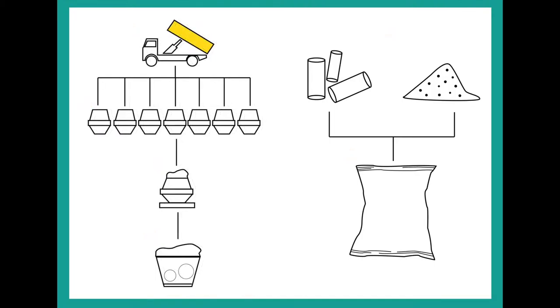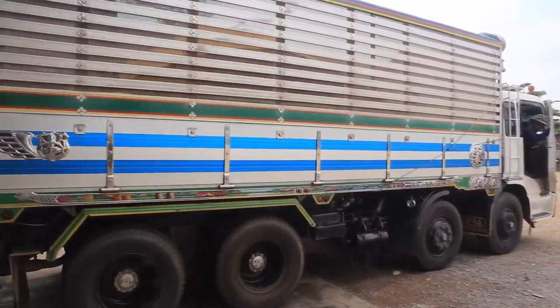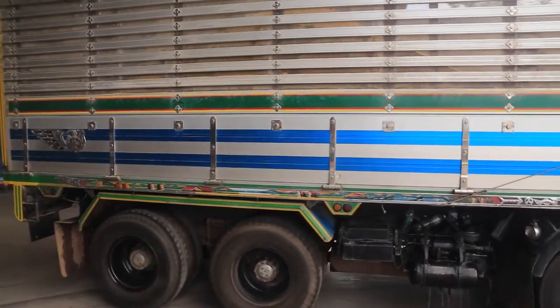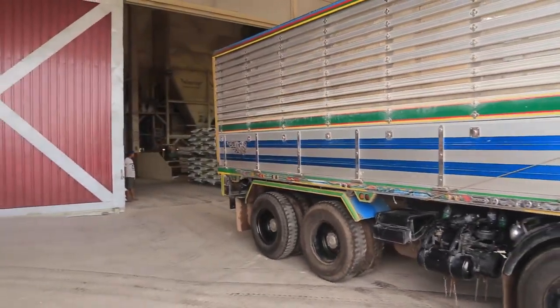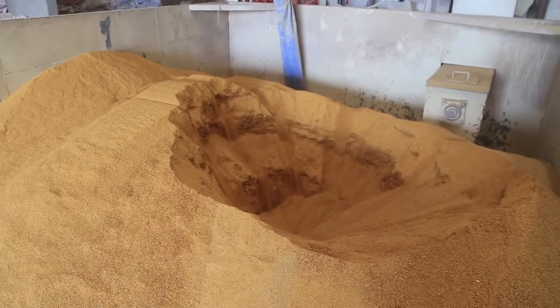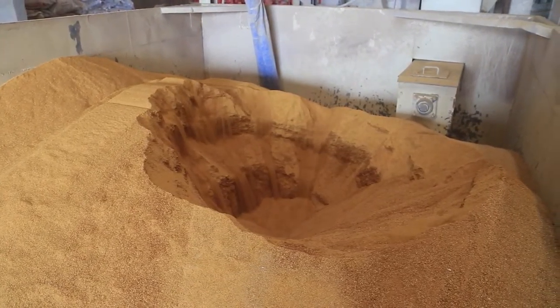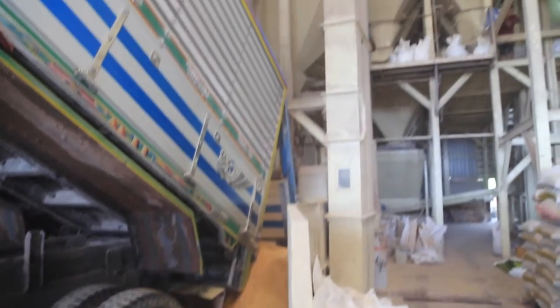The first step is the intake process. Loads of different materials are delivered to the factory, where the material is transferred from the truck to the intake, and then sucked up into the material tanks as you can see here on the screen.